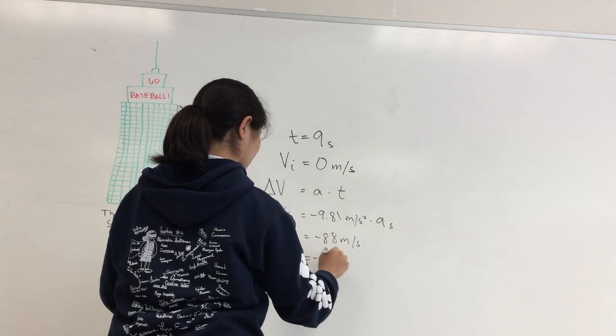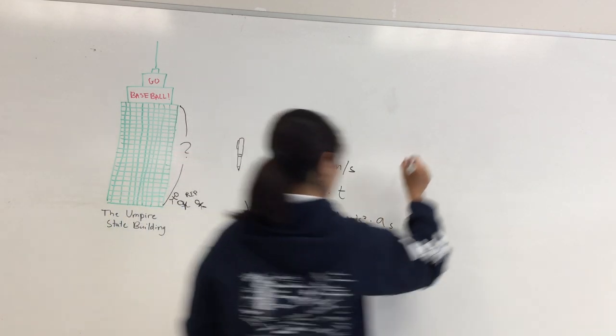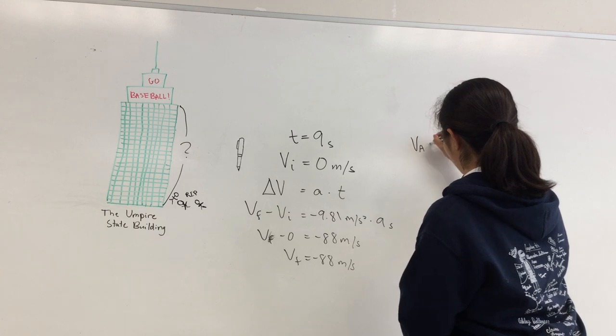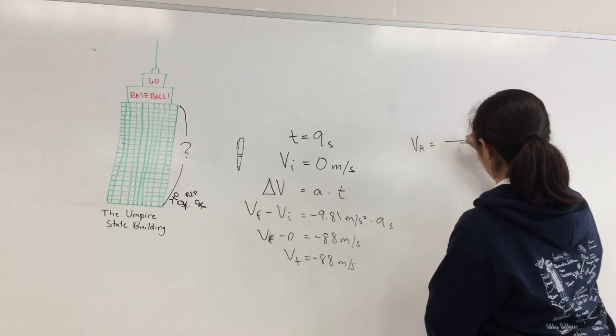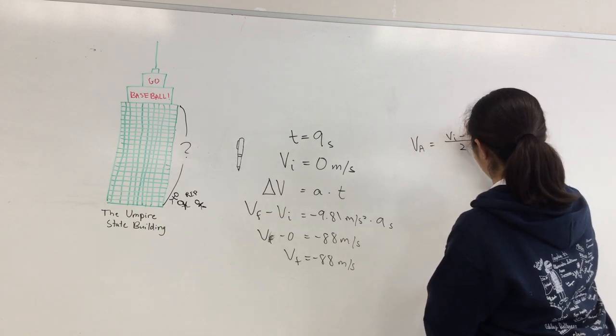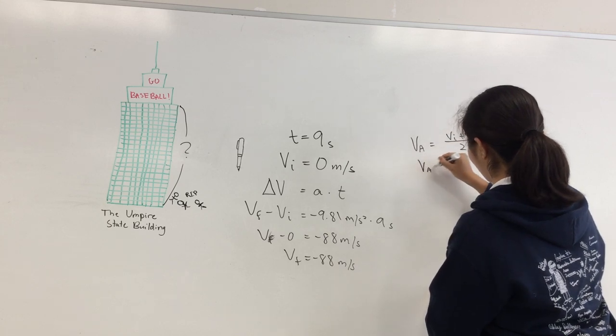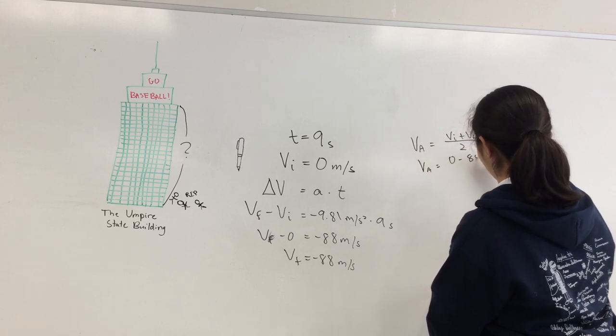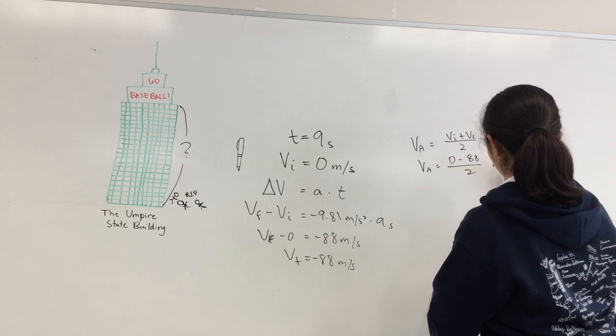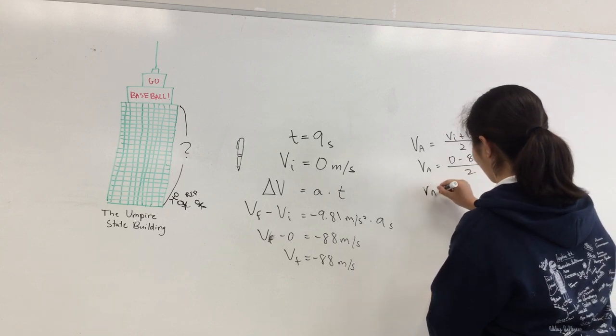Now, we can solve for the average velocity, which is half the initial velocity plus the final velocity. The average velocity can be solved by 0 minus 88 over 2, which is about negative 44 meters per second.